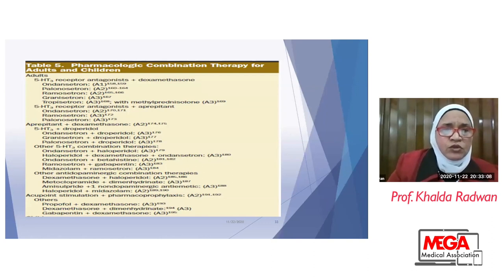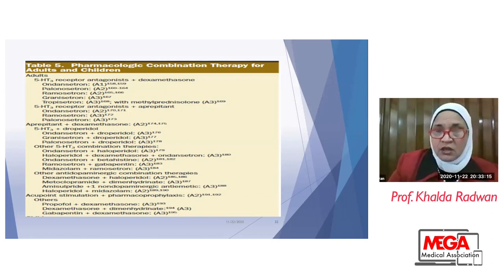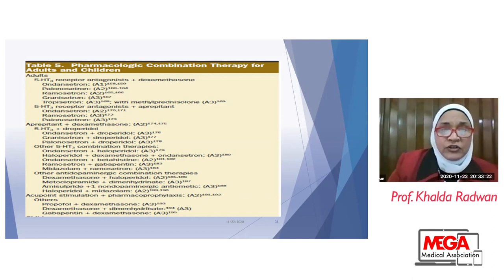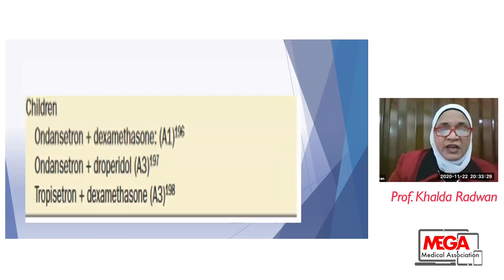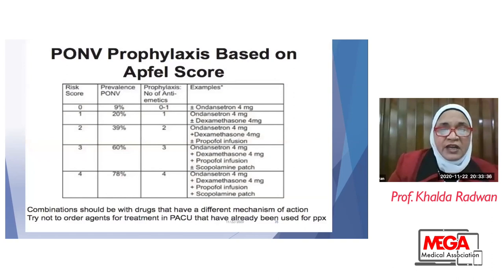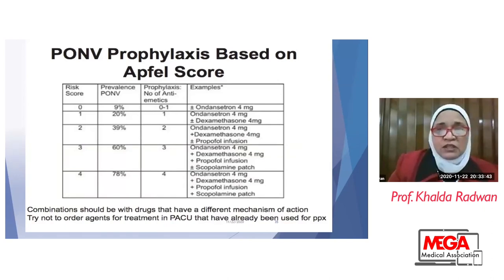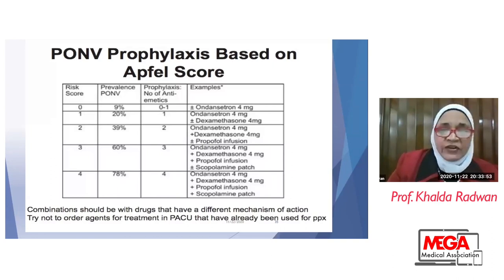Another combination that can be used is ondansetron with dexamethasone and midazolam. For children, dexamethasone with ondansetron is the first-line choice for treatment of postoperative vomiting. According to the Apfel score: if no risk factors, give ondansetron 4 mg. With one risk factor, ondansetron 4 mg with or without dexamethasone. With two risk factors, give both ondansetron and dexamethasone 4 mg. With three risk factors, give three drugs: ondansetron, dexamethasone, and propofol infusion.